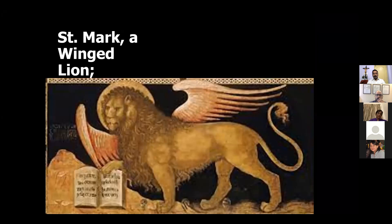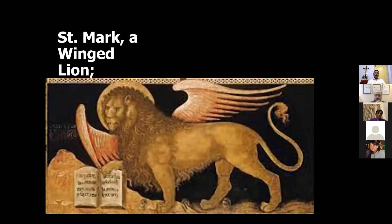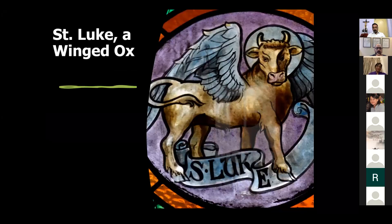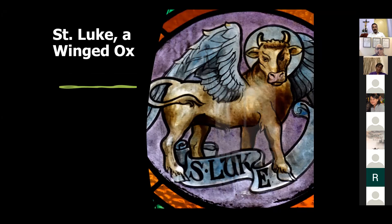Mark's audience were the Jews in Rome. Then we had Luke, symbolized by the winged ox. Luke's audience were the Gentiles, and he is symbolized with an ox because he often talks about sacrifice. Luke's gospel also carries a lot of importance to the poor, the downtrodden, the marginalized, symbolizing that Jesus was open to all the Gentiles.